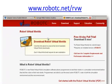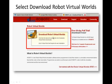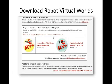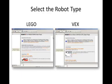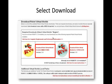Once you're at Robot Virtual Worlds, a new screen will show up. The top of the screen will be Download Robot Virtual Worlds — you'll select that link. When you select that link, it will take you down to an anchor in the middle of the page. At that point, you'll be able to decide whether you want to use the Lego platform or the VEX platform. You're able to use either, so select the version that you'd like to download.